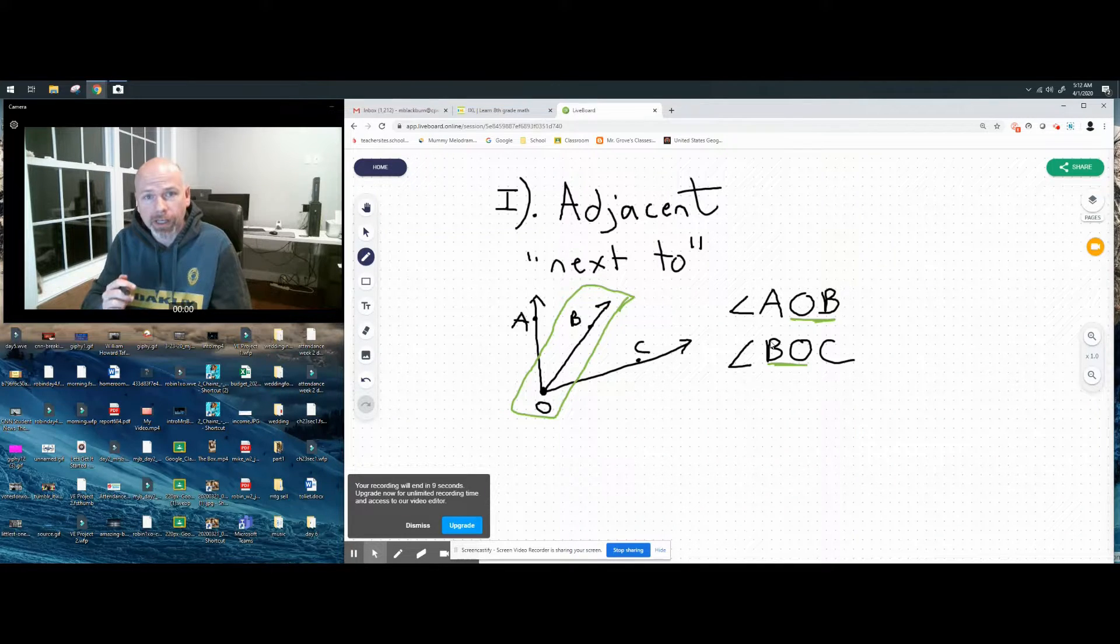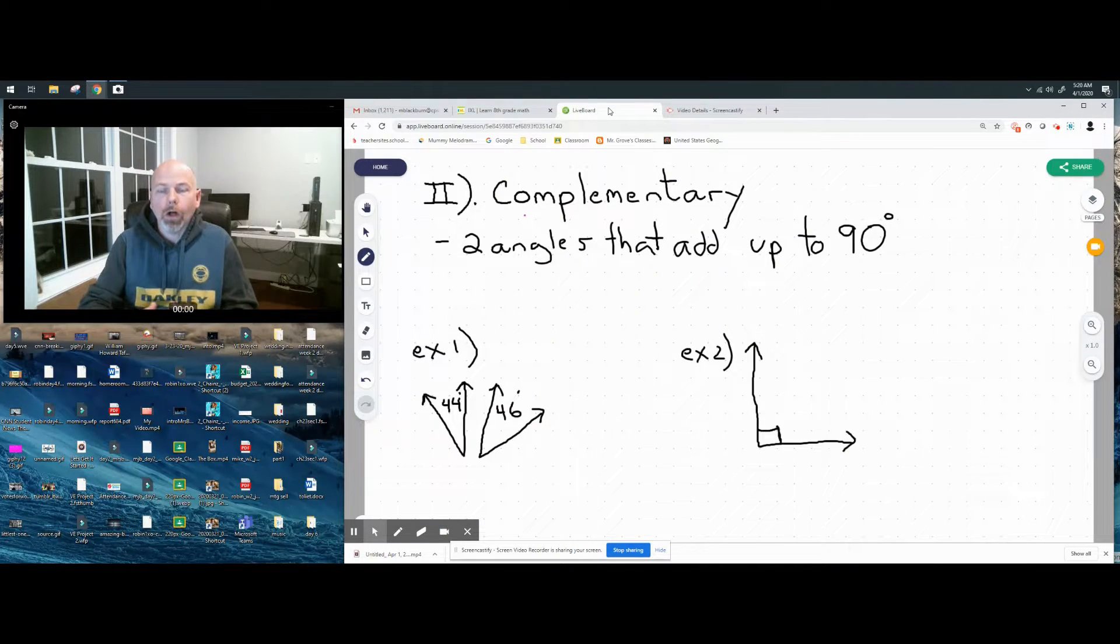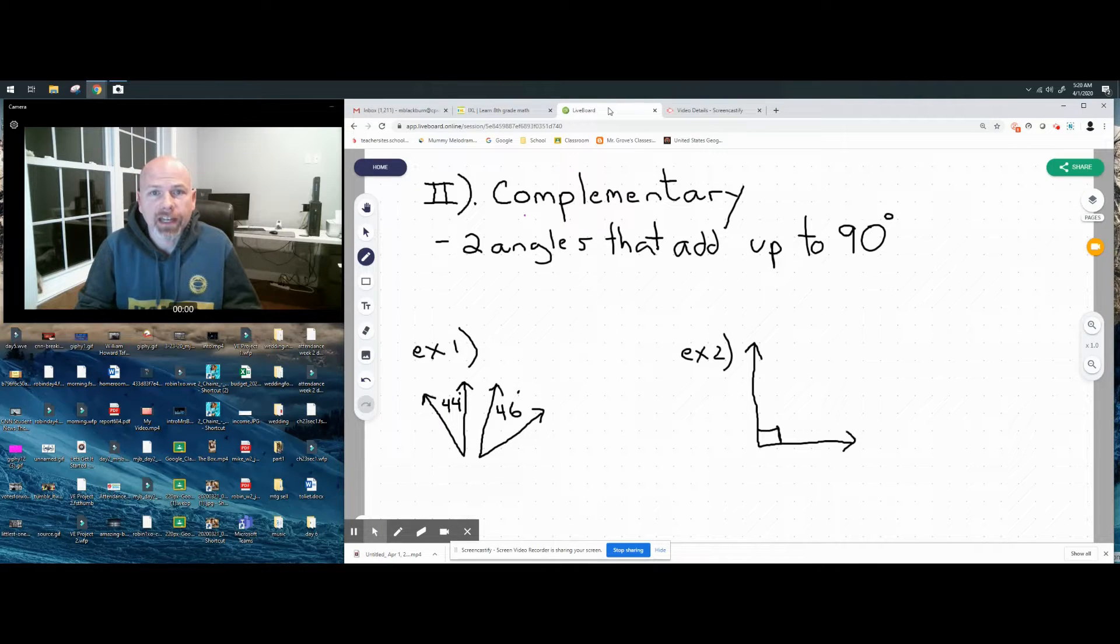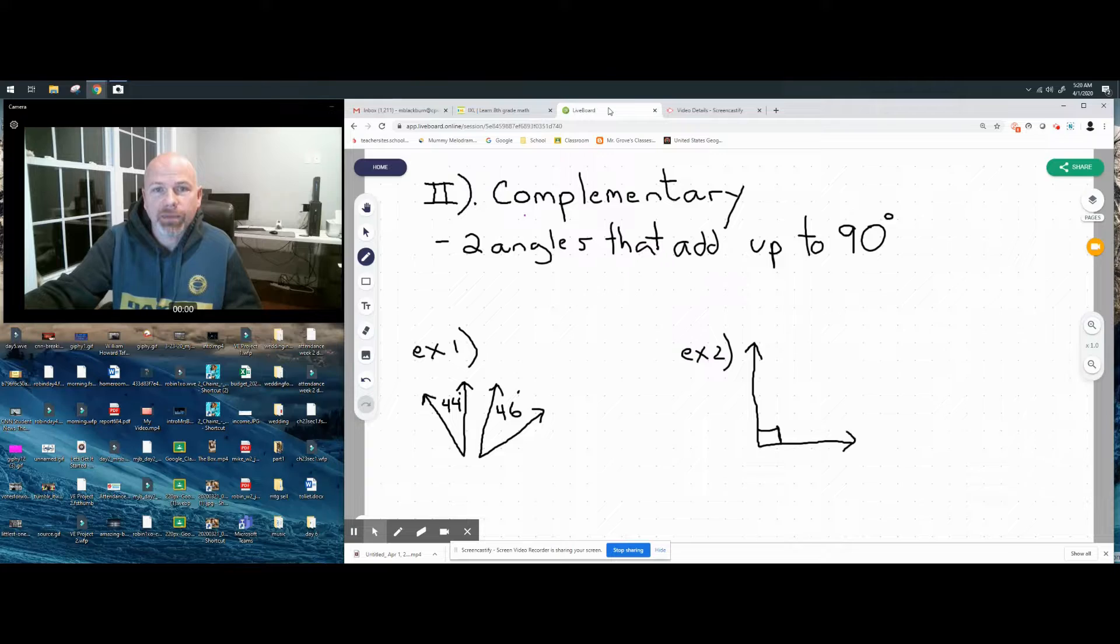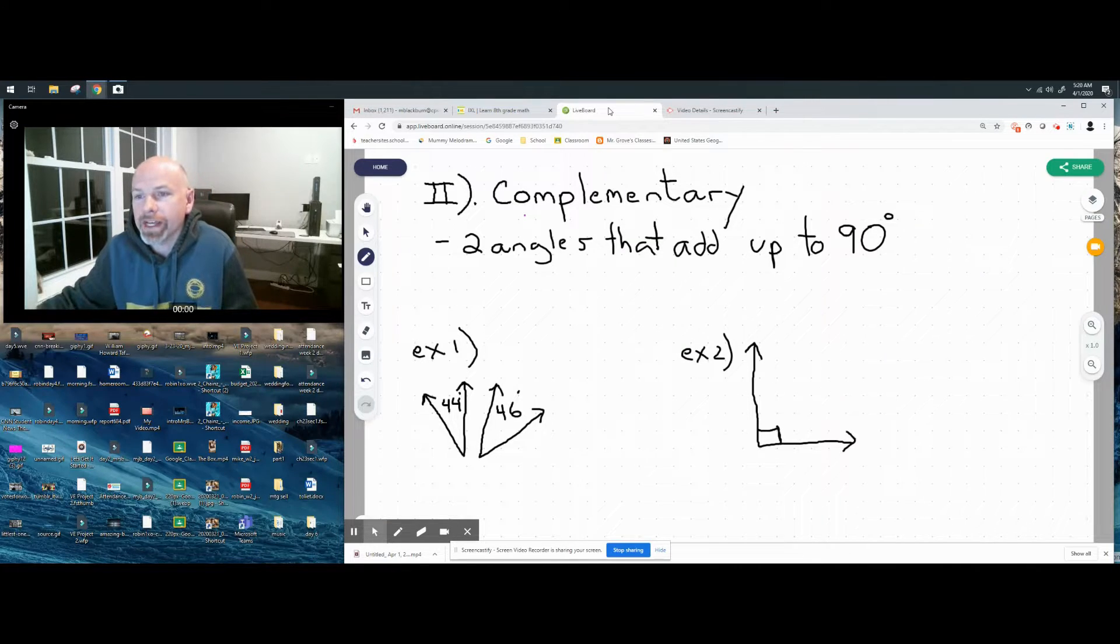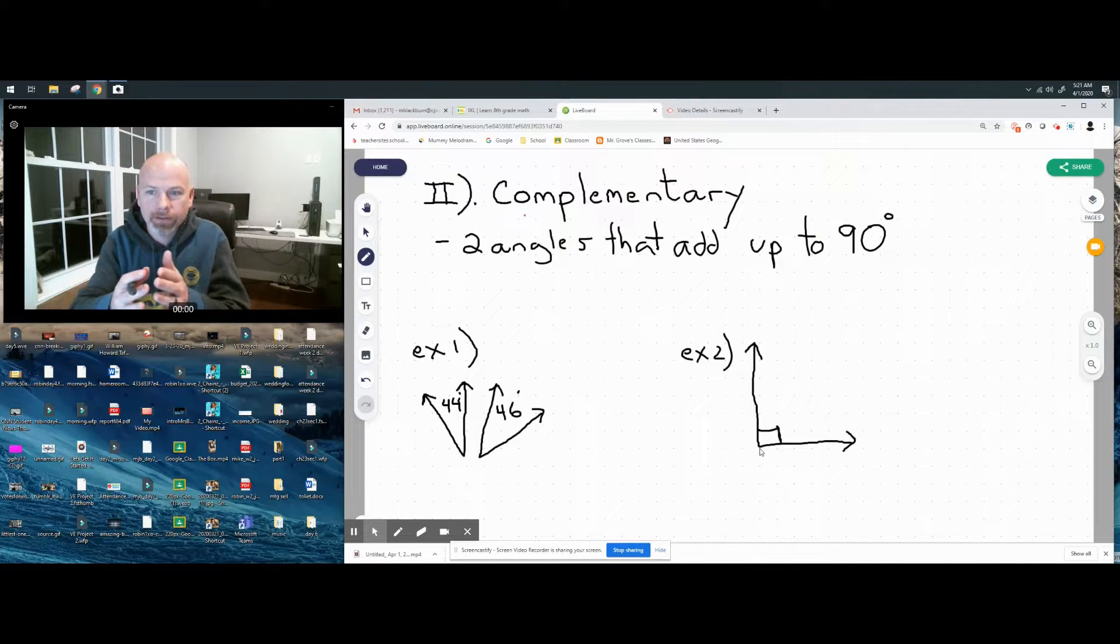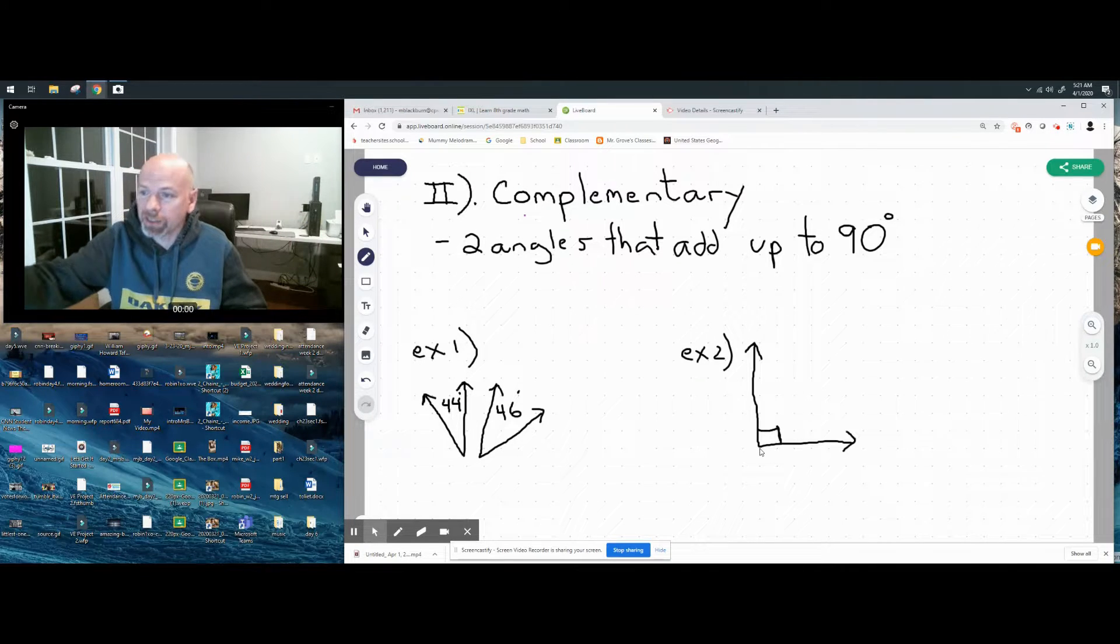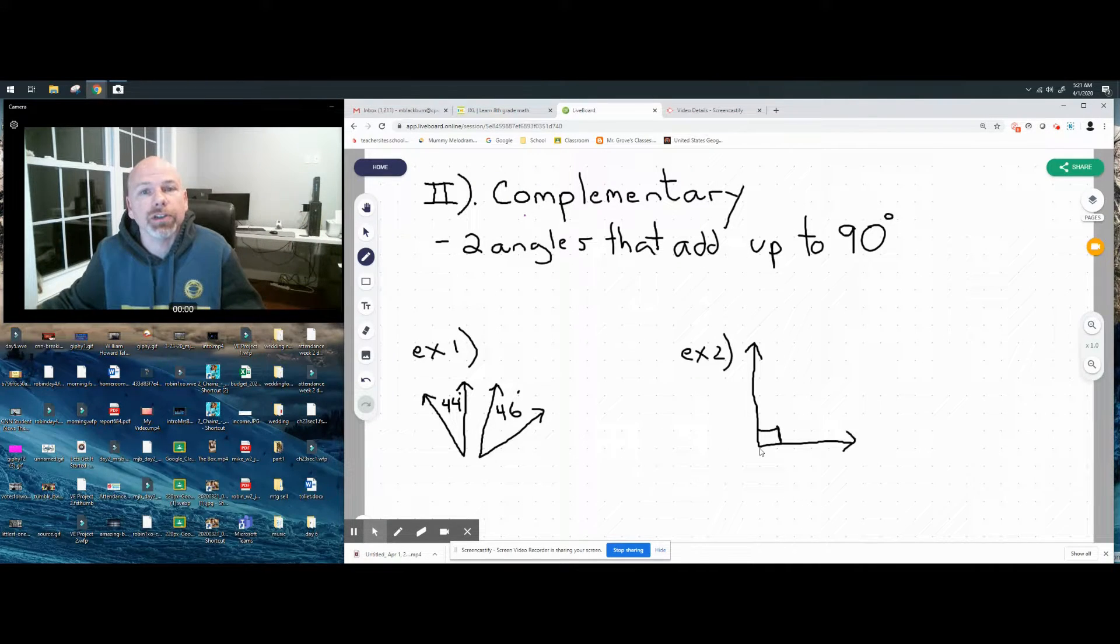Let's look at our second type of angle relationship. This is something you possibly have heard of before: complementary angles. Complementary - it's two angles that add up to 90 degrees. So it's not one 90-degree angle like you see in example two, it's two angles.